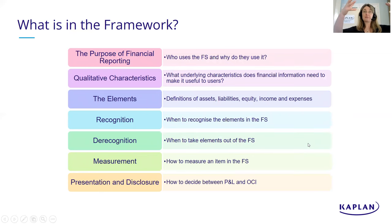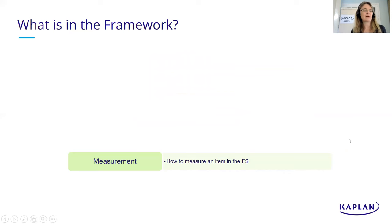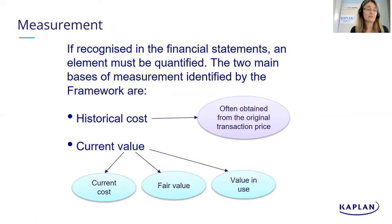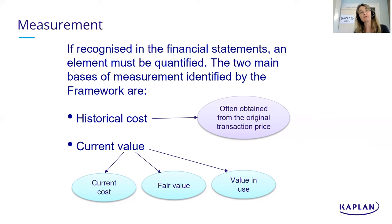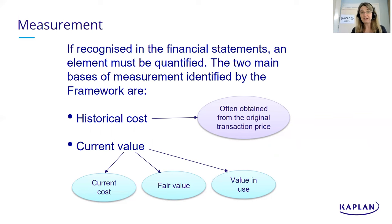Moving to measurement - what numbers do you attribute to assets, liabilities, income, and expenses? The framework identifies two basic approaches. Historical cost is broadly what you originally spent on the asset, including original cost less depreciation. Current value includes current cost (what it would cost to replace it now), fair value (market value), or value in use (present value of future cash flows the asset will earn).